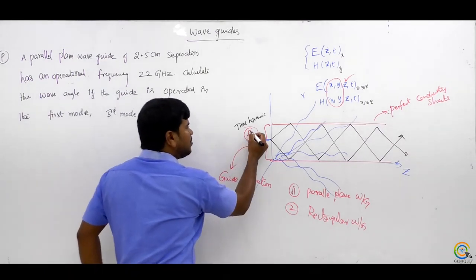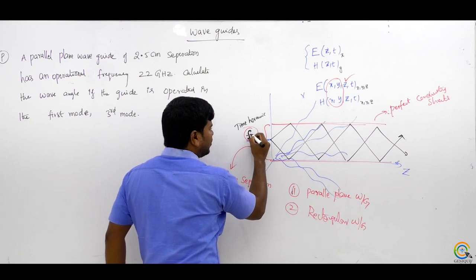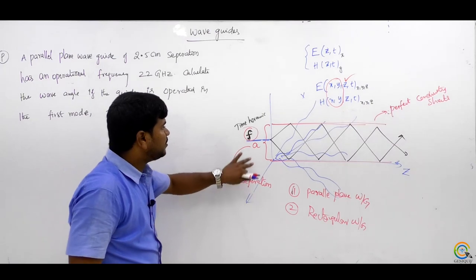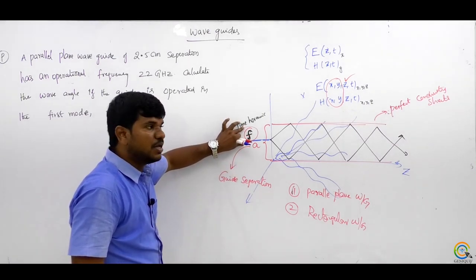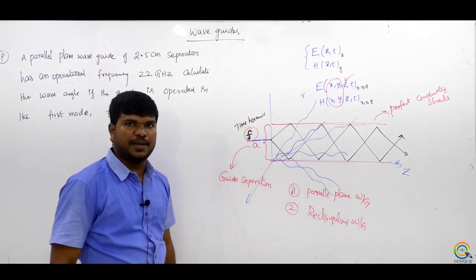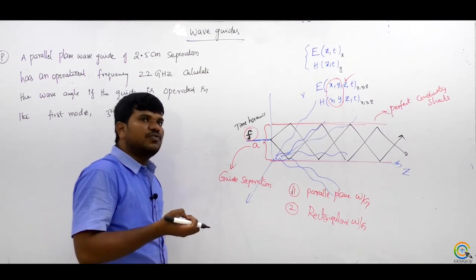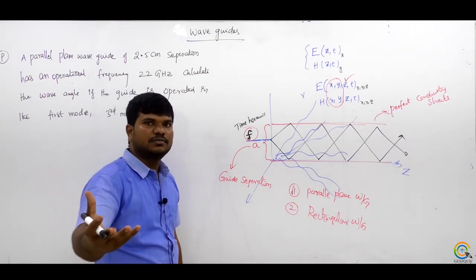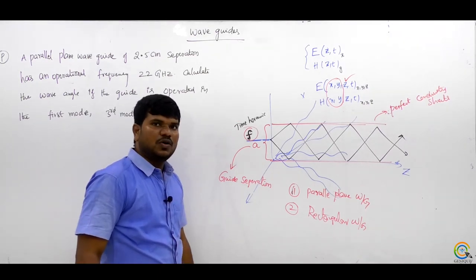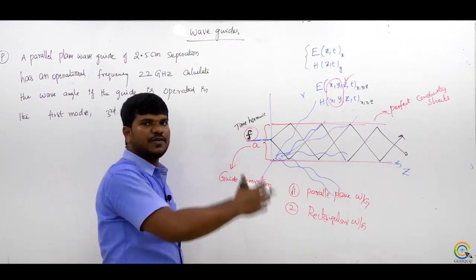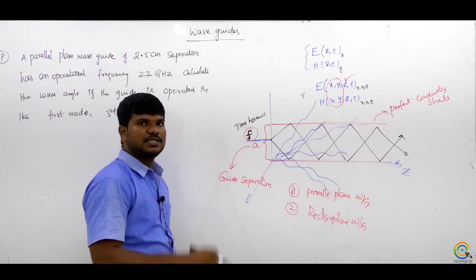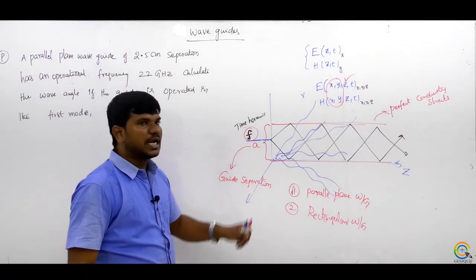The waveguide should maintain some operational frequency f. There must be some minimum frequency to make propagation happen. If you give whatever frequency you want, the waveguide won't accept it. You have to give some minimum amount of frequency, and that minimum frequency is called the cutoff frequency.